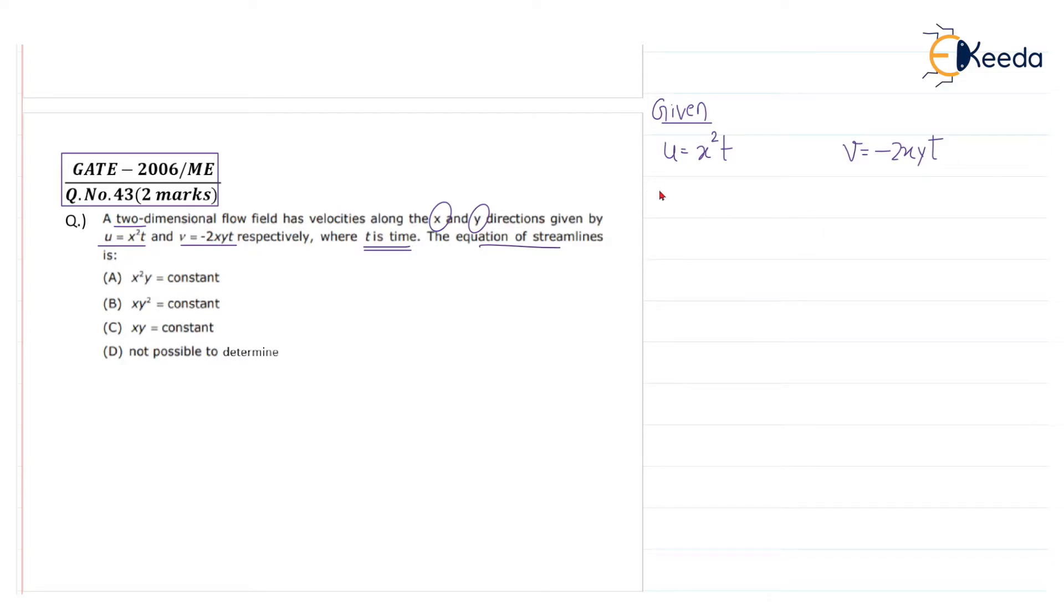The question is to find the equation of streamline. We know that the equation of streamline is given by, for a two-dimensional flow, dx by u equals dy by v. This is for a 2D flow.